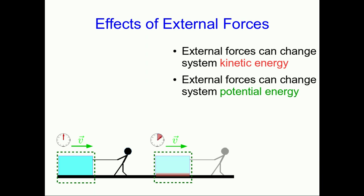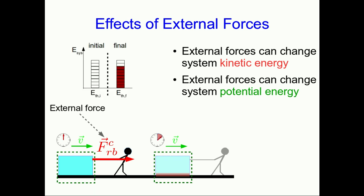Now here's a person pulling a block, and I've included the block and the floor in my system. Again there's an external force, which is the force that the rope exerts on the block. What's happening now, if the block moves at constant velocity because of this interaction, is that the system of the block and the floor simply gains thermal energy.